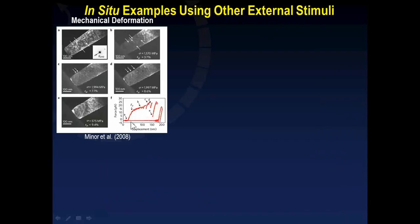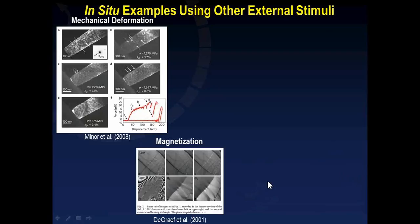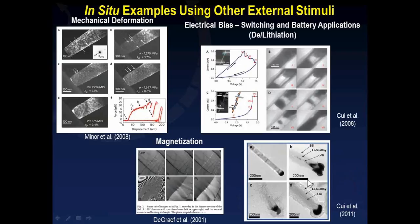Here are some other examples of in situ experiments using other stimuli. The first example utilizes nanocompression to measure mechanical properties and observe microstructure evolution of nanoscale volumes simultaneously. The second shows how in situ magnetization can lead to changes in domain walls in magnetic structures when a magnetic stimulus is applied. The third shows how application of an electrical bias can be used to study battery and phase change memory devices.